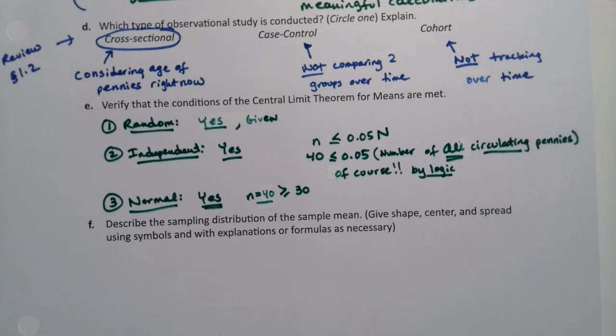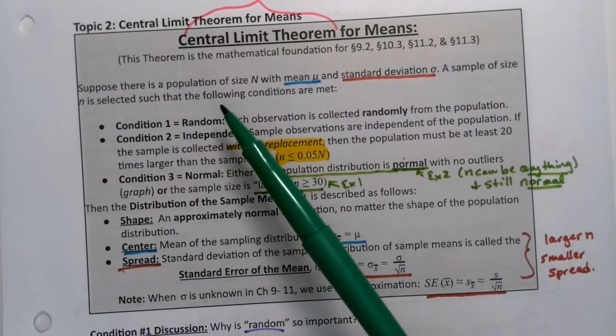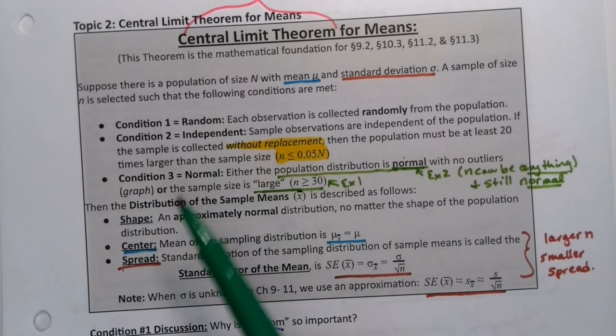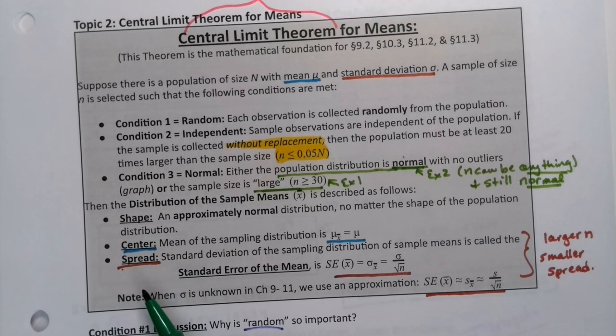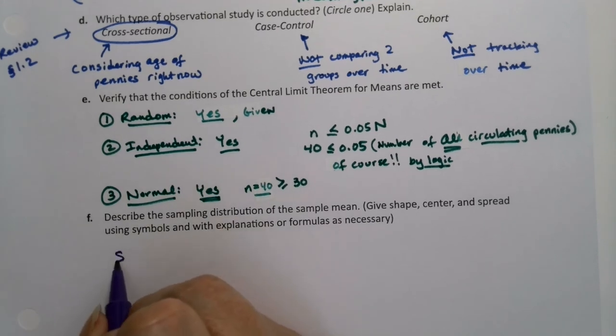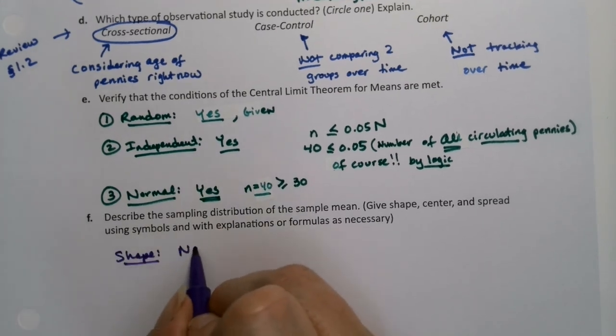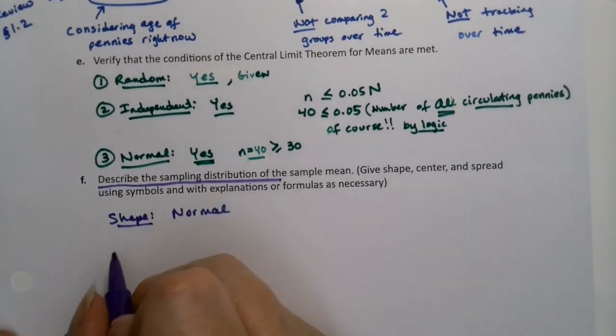So now we're going to describe the sampling distribution. Going back to the central limit theorem. Think about what we just did. So if you look at the box, we just worked through the three conditions. Random, independent, normal. So we did those three. Once we have those three, then we can describe the distribution, which is the shape, center, spread piece. So shape. Well, the shape is normal. We just proved it. So shape, normal. This will be what describing the distribution means.